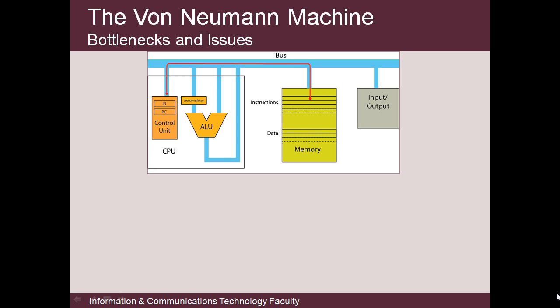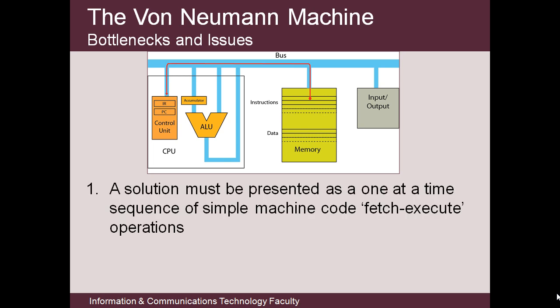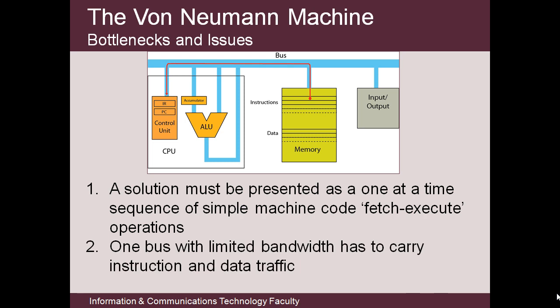Identifying the bottlenecks in this process shows the first issue as the one-at-a-time sequence of operations. Problems in the real world tend to happen at the same time, and it's often both possible and desirable to work on several bits of their solutions at once. Also, the machine can only execute simple binary coded machine instructions rather than real-world natural language, creating difficulties of error-free translation and communication with the machine. It requires special skills to communicate well with both computers and human beings. Then there is the necessity to send all instructions and data to and fro across a single bus, as this will introduce contention problems and speed limits.